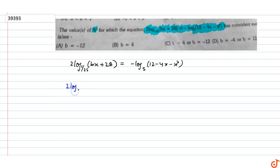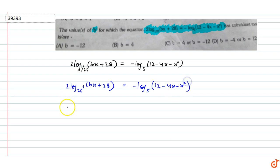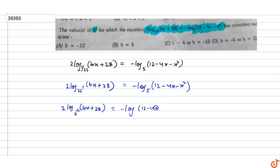We rewrite the base: 1/25 equals 25 to the power minus 1, so 2 log (Bx + 28) to the base 25^(-1) equals minus log (12 minus 4x minus x squared) to the base 5. Further, since 25 = 5 squared, the base becomes 5^(-2), giving 2 log (Bx + 28) to the base 5^(-2) equals minus log (12 minus 4x minus x squared) to the base 5.